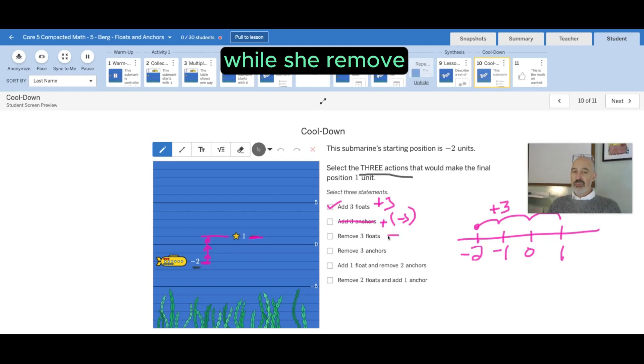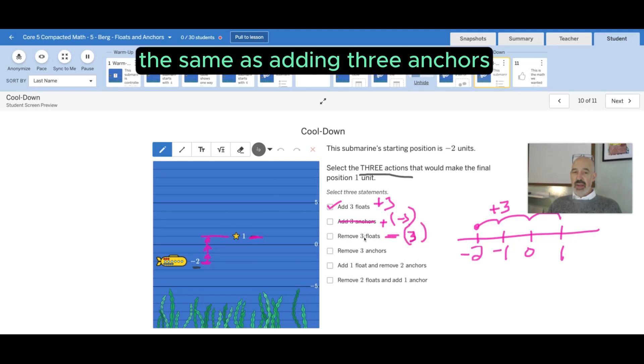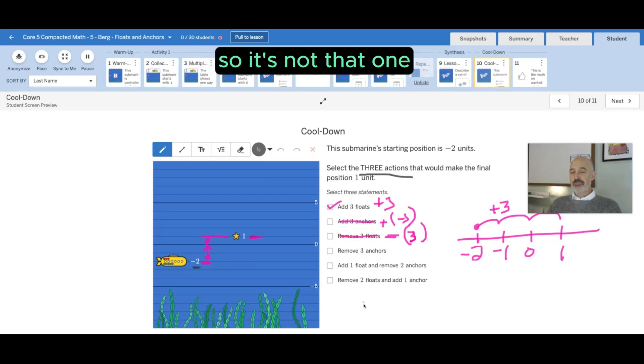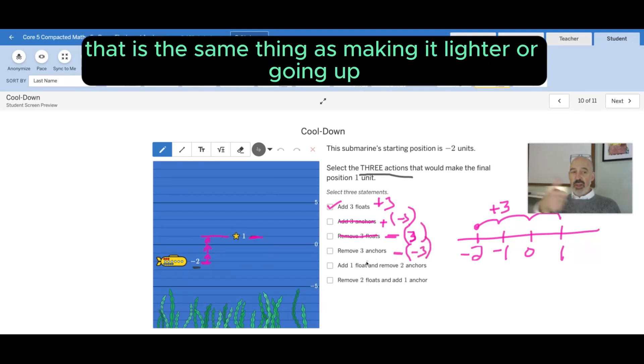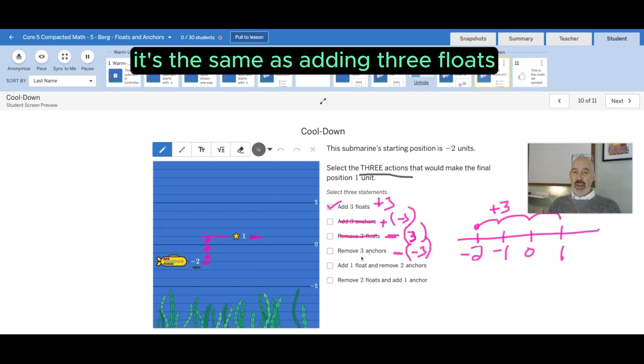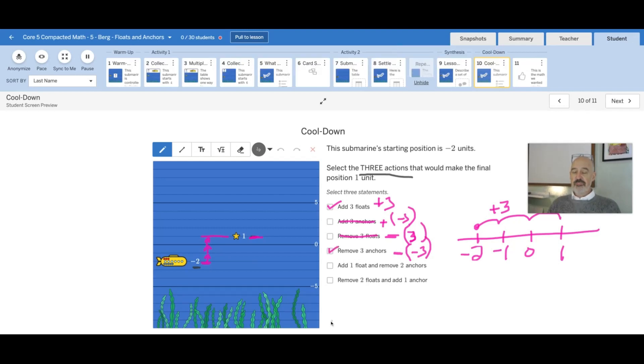Removing three floats, well if you remove three floats, again it's going to go down three, the same as adding three anchors. So it's not that one. Removing three anchors, that's removing a negative three. That is the same thing as making it lighter or going up. It's the same as adding three floats, this one is true.